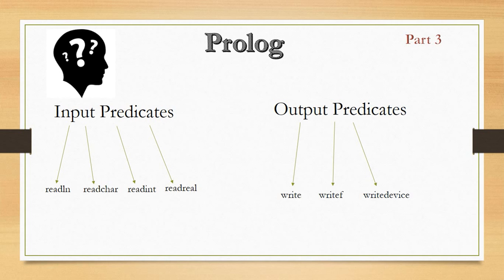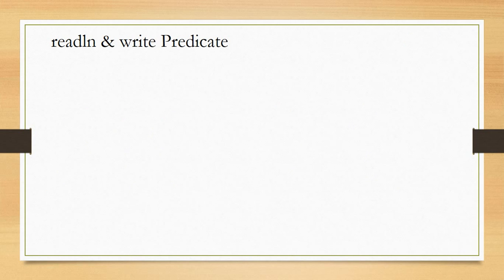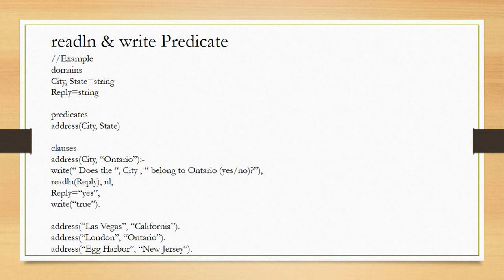Let's understand the first example using readln and write. readln is for string variables — if you want to input a string type value, use readln. In this example I have two variables, city and state of string type, and a third variable reply also of string type. The predicate is address(city, state).